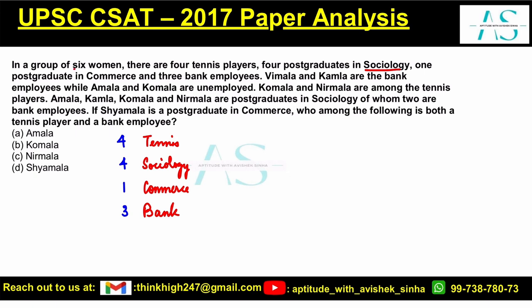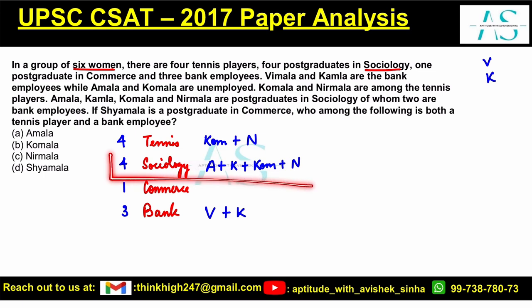There are total six women. Vimla and Kamla are bank employees, so I'm denoting their initials — V for Vimla and K for Kamla. Vimla and Kamla are bank employees, while Amala and Komala are unemployed. Vimla and Nirmala are among the tennis players. For Komala I'm using K.O.M., and for Nirmala I'm using N. So with this the sociology group is complete.